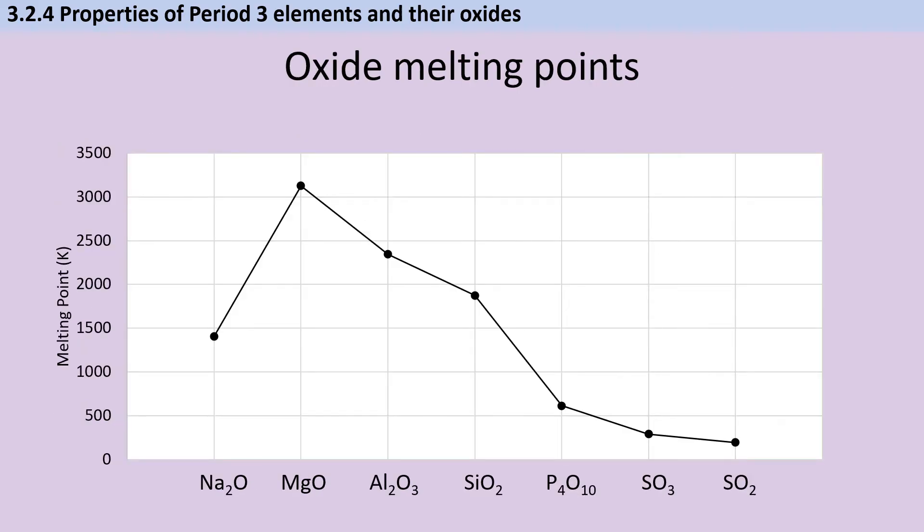We discussed the importance of structure and bonding for explaining the melting points of the period three elements, and that's also true when we think about their oxides. Sodium oxide is ionic and therefore has a relatively high melting point because it takes a lot of energy to overcome that strong electrostatic force of attraction between the positive sodium ions and the negative oxide ions. Magnesium oxide is also ionic but it has a higher melting point due to the increased charge density of the Mg2+ ions which are able to more strongly attract the oxide ions, and therefore it requires more energy to overcome that attraction and melt the lattice.